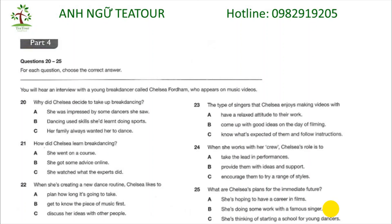So what's coming up next, Chelsea? Well, I'm getting lots of offers. Somebody wanted to make a movie about me, but I wasn't keen, so I said no. But I am appearing in some new music videos with a big-name star. I can't tell you who yet. It's secret. People ask me why I don't start a dance academy, but I'm a bit young for that yet. That is the end of Part 4.